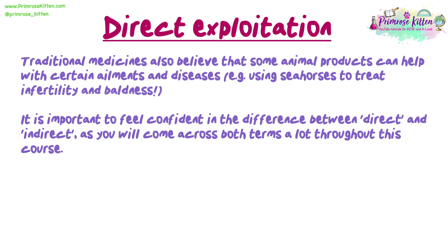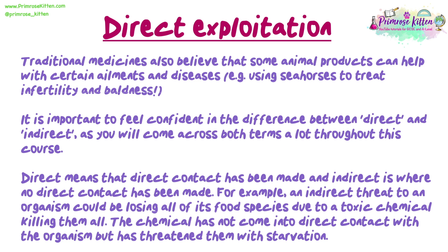It is important to feel confident in the difference between direct and indirect, as you will come across both these terms throughout this course. Direct means that direct contact has been made, and indirect is where no direct contact has been made. For example, an indirect threat to an organism could be losing all of its food species due to a toxic chemical killing them all — the chemical has not come into direct contact with the organism but has threatened them with starvation.